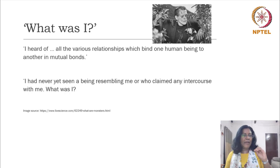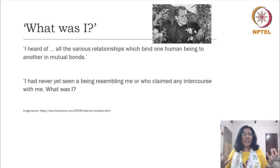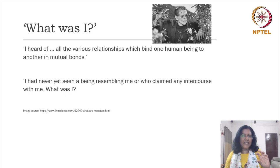Frankenstein's monster states: 'I heard of all the various relationships which bind one human being to another in mutual bonds.' It is very interesting that the monster is self-taught — he reads everything, he reads Paradise Lost. It is very significant that domesticity is key to one's good sense of righteousness, one's morality, and all those elements which keep you sane and happy and healthy.